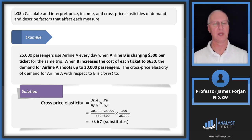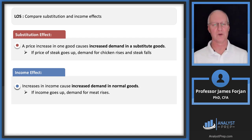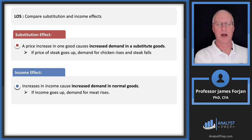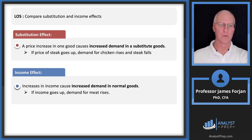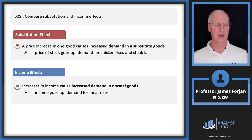To summarize the LOS: the substitution effect means a price increase in one good causes increased demand for a substitute good — if no one's buying grapefruit, everyone buys oranges, which drives up the orange price. The income effect means increases in income cause increased demand for normal goods — the more cash flow you have, the more you'll spend.